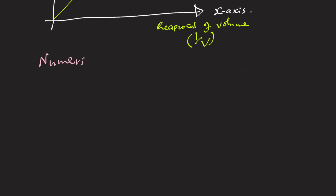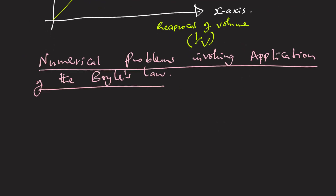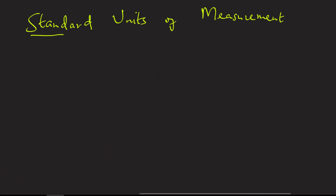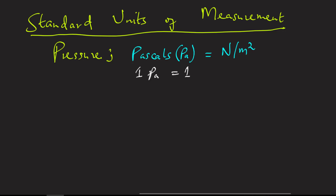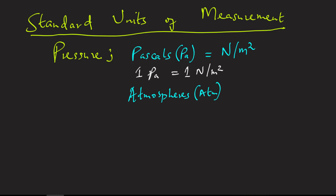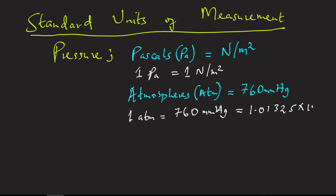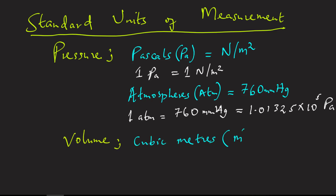Before we look at the various numerical problems involving Boyle's law, let's understand some of the units we'll use to measure pressure. The units include pascals, which is equivalent to 1 newton per square meter. Sometimes we can use atmospheres to measure pressure. One atmosphere represents 760 millimeters of mercury, and is equivalent to 1.01325 × 10⁵ pascals. For volume, we will be using cubic meters.